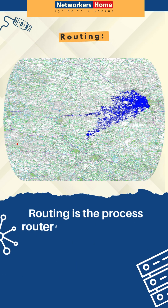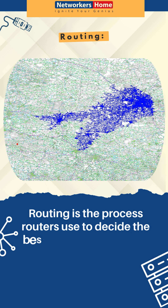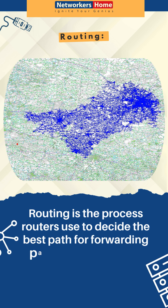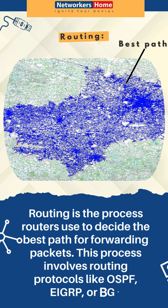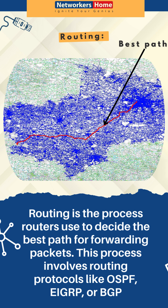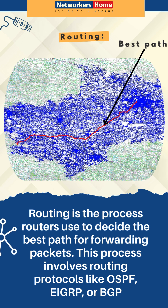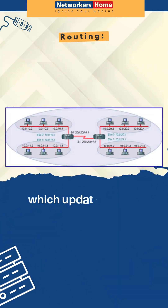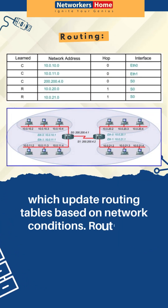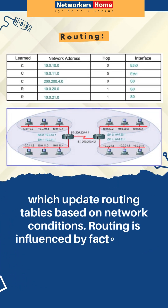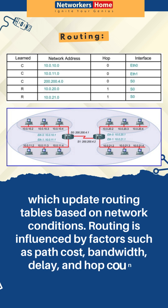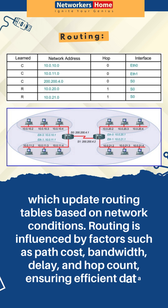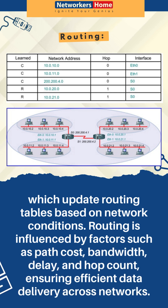Routing is the process routers use to decide the best path for forwarding packets. This process involves routing protocols like OSPF, EIGRP, or BGP, which update routing tables based on network conditions. Routing is influenced by factors such as path cost, bandwidth, delay, and hop count, ensuring efficient data delivery across networks.